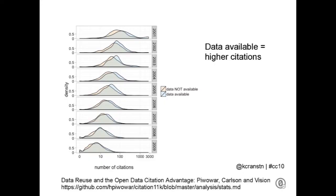So in addition to sticks, we want to talk about carrots. There's an increasing number of publications now showing that if you make your data available, your paper gets higher citations. Scientists care about citations — they get us tenure.